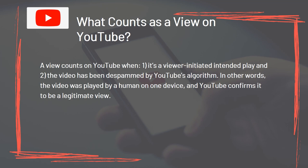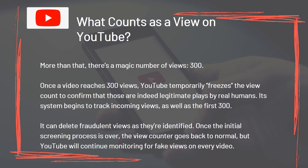What counts as a view on YouTube? A view counts on YouTube when: one, it's a viewer-initiated, intended play, and two, the video has been de-spammed by YouTube's algorithm. In other words, the video was played by a human on one device and YouTube confirms it to be a legitimate view. There's a magic number of views – 300. Once a video reaches 300 views, YouTube temporarily freezes the view count to confirm that those are indeed legitimate plays by real humans. Its system begins to track incoming views as well as the first 300, and it can delete fraudulent views as they're identified. Once the initial screening process is over, the view counter goes back to normal, but YouTube will continue monitoring for fake views on every video.